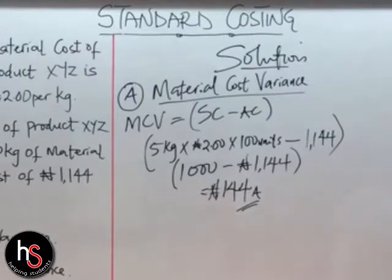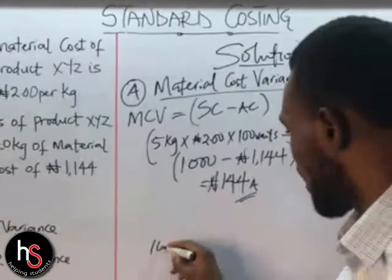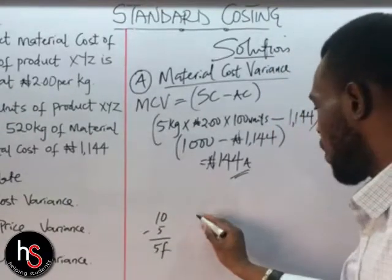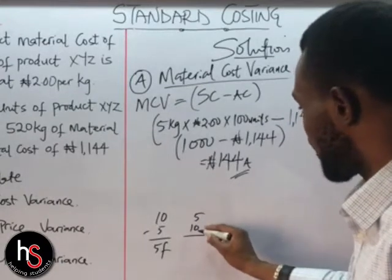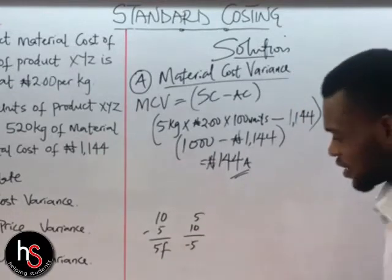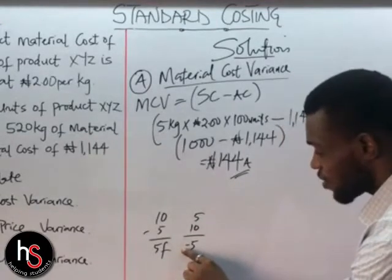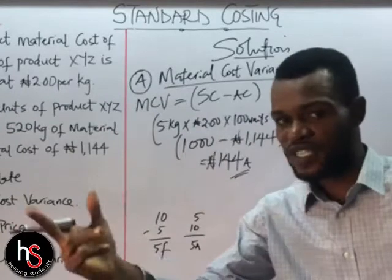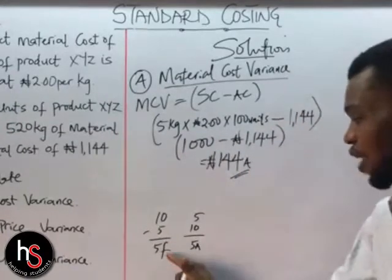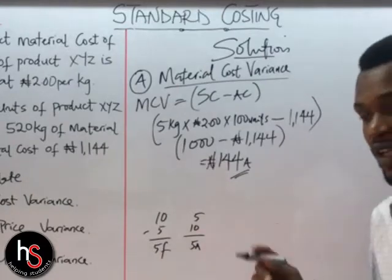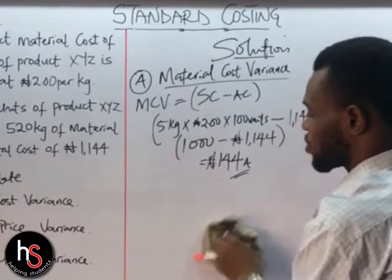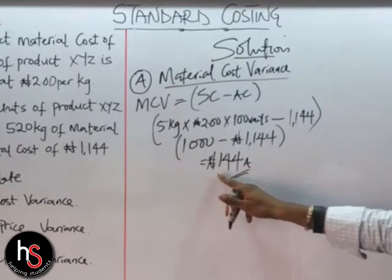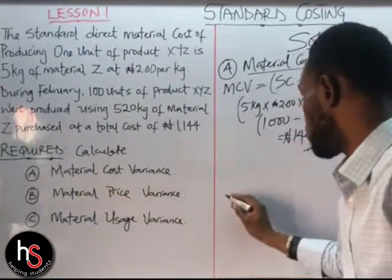Now, why do we say adverse? If we have 10 minus 5, the result is positive 5, which is favorable. But when we have 5 minus 10, the result is minus 5. In standard costing, we don't write the negative sign — instead we present it with 'A' for adverse. As I explained in the previous video, when it is favorable we write 'F', and when it is adverse we write 'A'. So the answer for question number 1 is 144 Naira adverse.